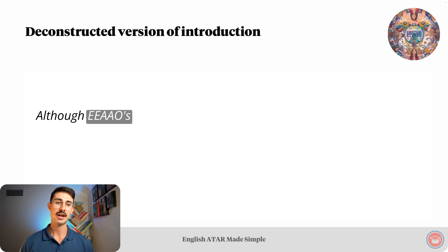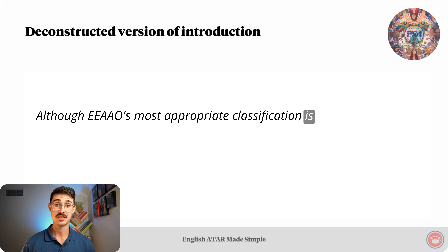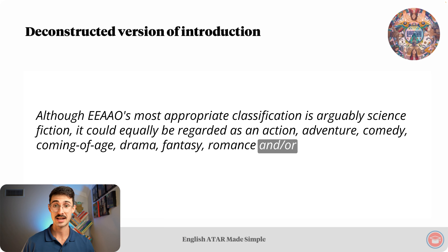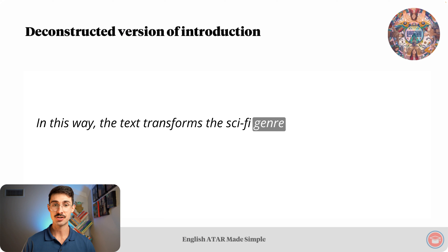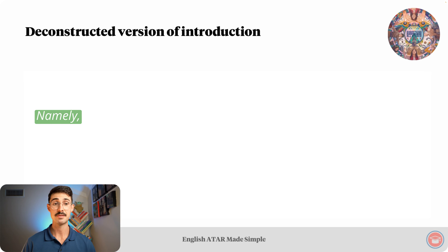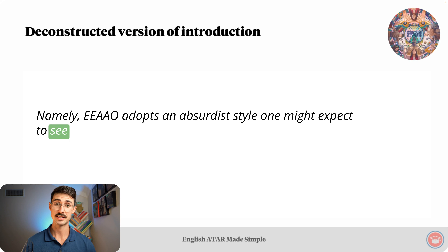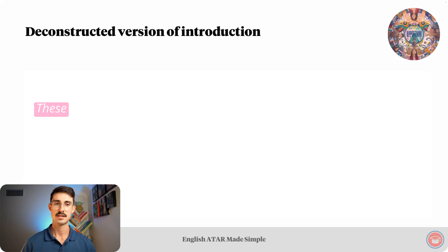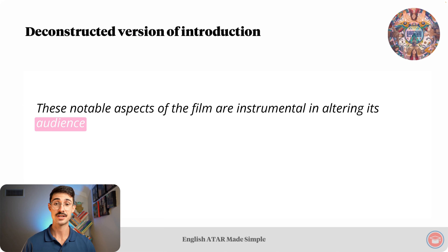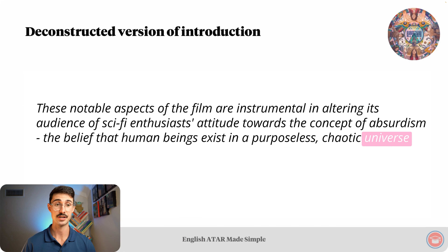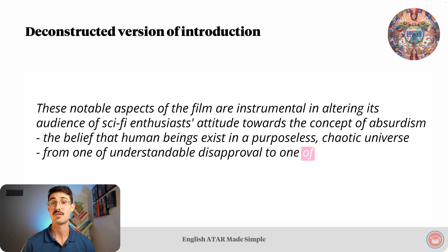Here is the terminology element: although Everything Everywhere's most appropriate classification is arguably science fiction, it could equally be regarded as an action, adventure, comedy, coming of age, drama, fantasy, romance, and/or superhero film. In this way, the text transforms the sci-fi genre by blending various elements of other genres into its overarching story. Here's the body paragraph element: namely, Everything Everywhere adopts an absurdist style one might expect to see in a comedy, has the emotional intensity of a drama, and manipulates structural elements like an adventure film. Lastly, the thesis: these notable aspects of the film are instrumental in altering its audience of sci-fi enthusiasts' attitude towards the concept of absurdism — the belief that human beings exist in a purposeless, chaotic universe — from one of understandable disapproval to one of uplifting curiosity.